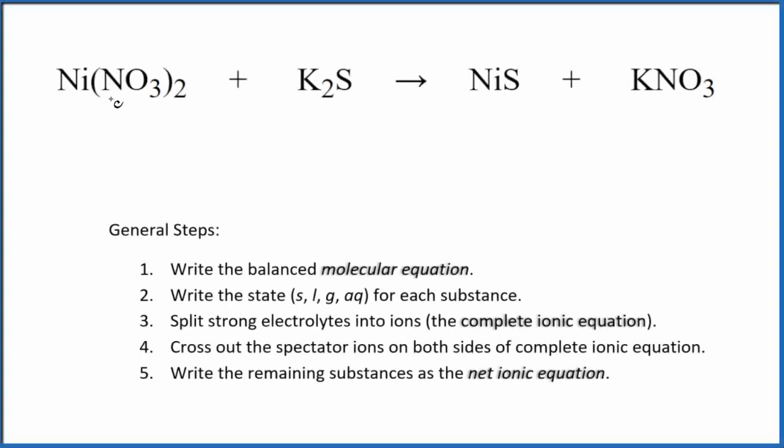Let's write the balanced net ionic equation for Ni(NO3)2 plus K2S. This is nickel 2 nitrate, and this is potassium sulfide. The first thing we need to do with net ionic equations is balance the molecular equation.